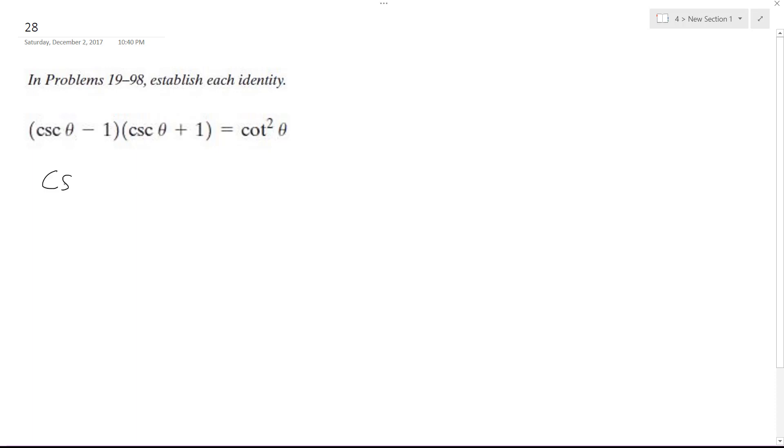So first thing I'm going to do is cosecant squared theta plus cosecant theta minus cosecant theta minus 1, which is equal to cotangent squared theta.